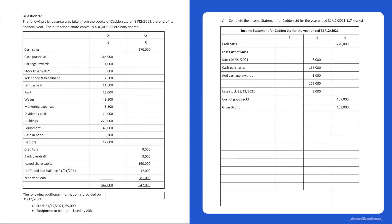You have to calculate the expenses, which is the income statement part two of the combined statement. After you've done this, you have to complete a statement of financial position, which we'll be doing later on in the video. We will begin with calculating the depreciation — they have left a box for us to do our workings.